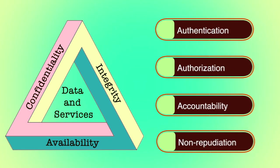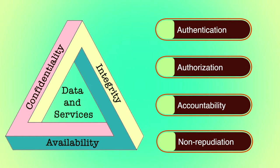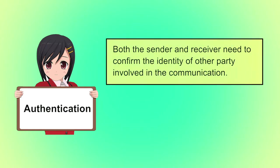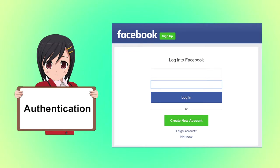Although the CIA triad is well established, some in the security field feel that additional concepts are needed. Four most commonly mentioned are authentication, authorization, accountability and non-repudiation. Authentication is the process of verifying that the identified user is the real owner of his or her identity. For example, to access your Facebook account, you should enter a valid ID and password — your ID and password prove your authenticity.